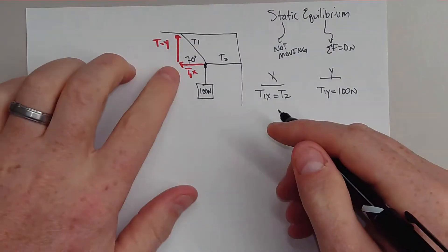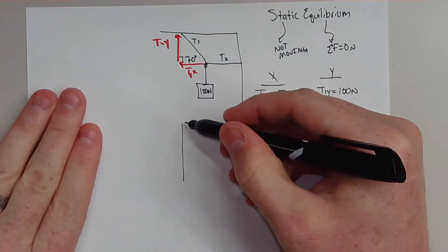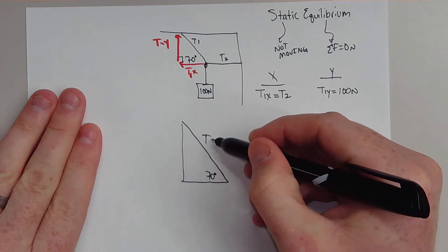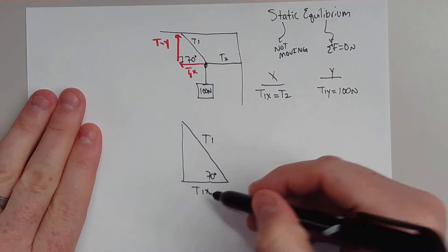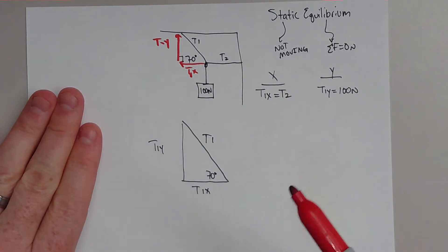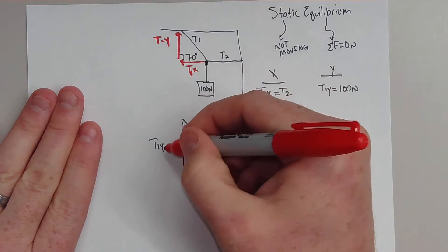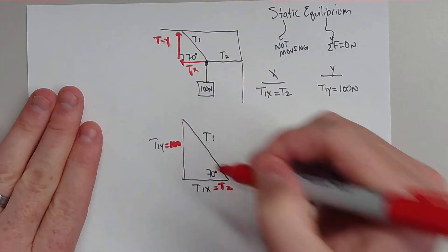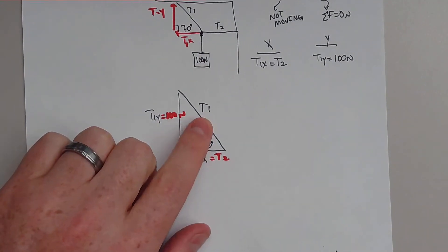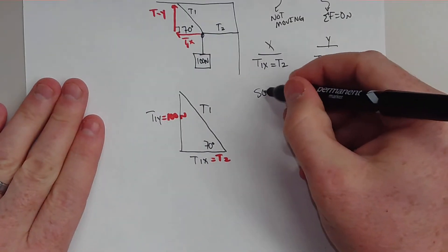Now that we have that, we can actually use some trig, because we actually have a right triangle right here. So I'm going to pull this right triangle out. This is T1, this is T1X, and this is T1Y. We've already deducted that T1X is actually equal to T2, and T1Y is actually equal to 100 newtons. So we can use trigonometry, SOHCAHTOA.